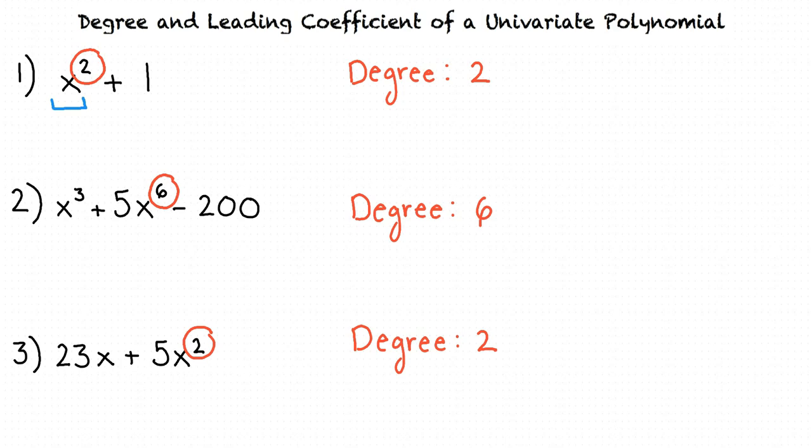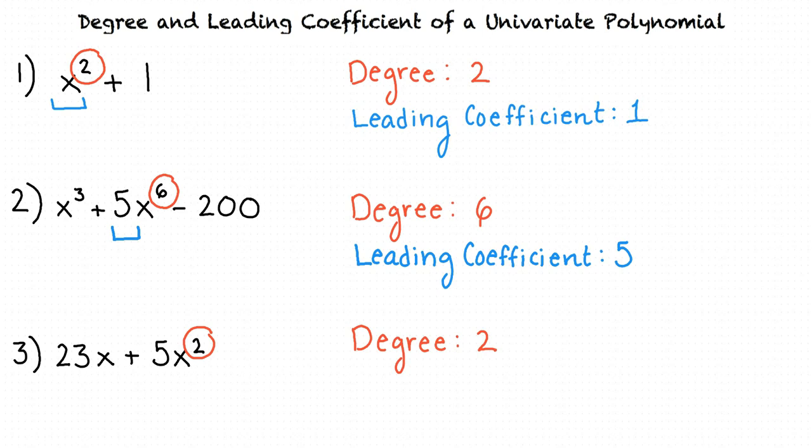So in the first expression, we have a leading coefficient of 1. And in the second expression, it's 5? That's exactly right. Now let's try the third expression, 23x plus 5x squared. We previously identified that the highest power is a 2, which makes it a degree 2 polynomial. The constant attached to the x squared term is a 5, making the leading coefficient 5.